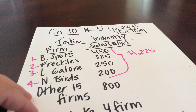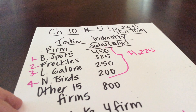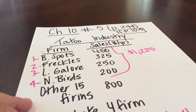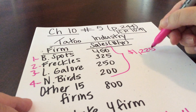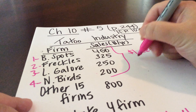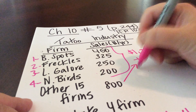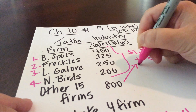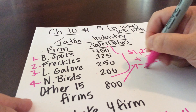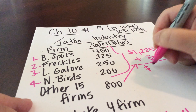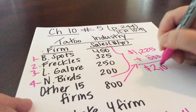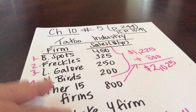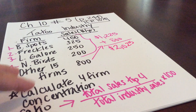Next, we need total industry sales. We'll take the top four total and add the $800 for the rest of our firms, and we get total sales in the industry of $2,025.